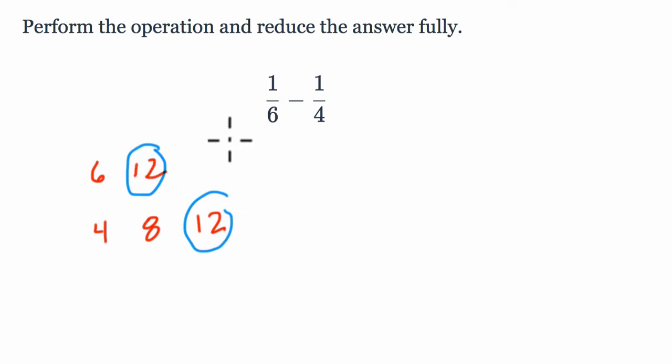The second multiple of 6 is 12, so we can scale up a sixth by multiplying by 2 over 2. And the third multiple of 4 is 12, so we can multiply it by 3 over 3.